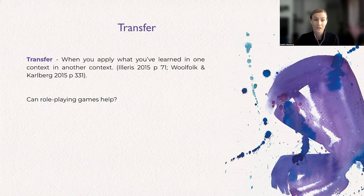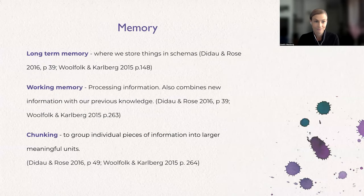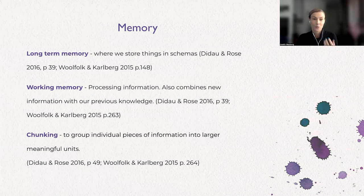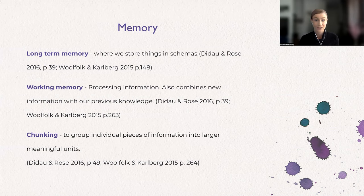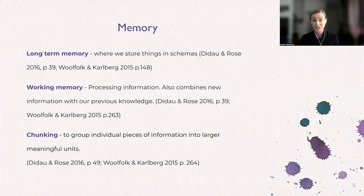To get there we have to start with memory and how this works. In cognitive science, our memory is often described as being built up by two main parts: the long-term memory and the working memory. The long-term memory is the storage — that's where we keep all the things we have learned in cognitive structures called schemas. The capacity of the long-term memory is huge and there is no clear answer to what the upper limit is yet.